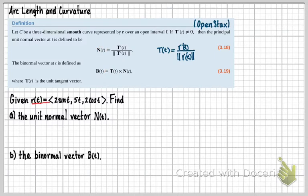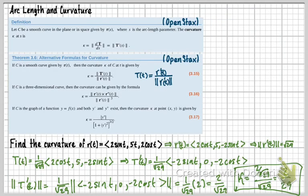This says given R T equaling 2 sine T, 5 T, 2 cos T, it says find the unit normal vector N T. So we're just going to follow this formula here, T prime T over the magnitude of T prime T. But since we've seen this previously, this was in the last video, I'm just going to go back there and use those computations. So let's go back here. Take a look at this.